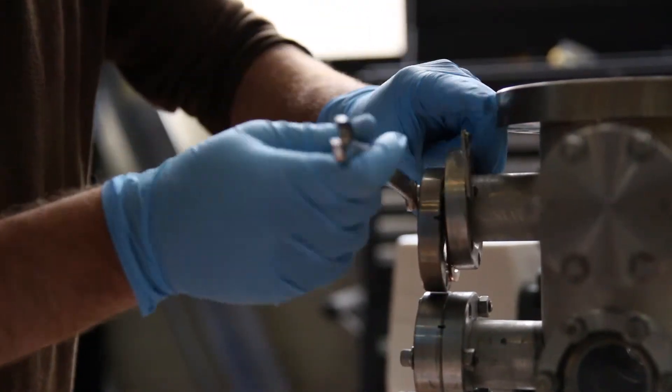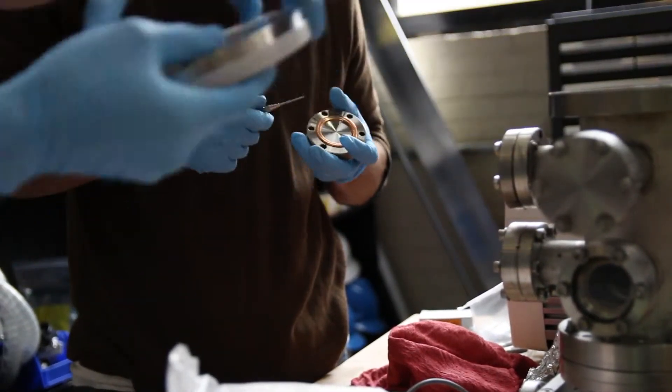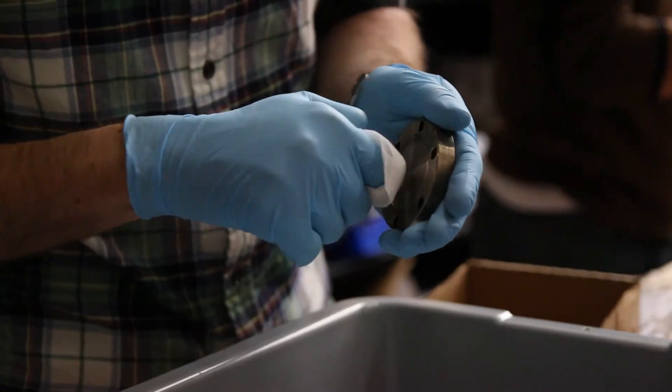So today we're taking apart all of the flanges and flange covers on the vacuum chamber. We're going to be washing them with denatured alcohol and acetone.